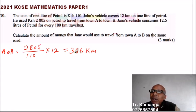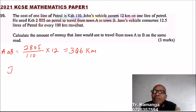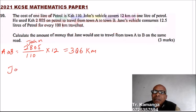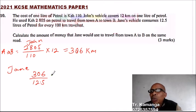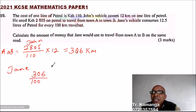Now that we know the number of kilometers, Jane's vehicle consumes 12.5 liters of petrol for every 100 kilometers. Jane was to cover 306 kilometers. So you find how many times 100 fits into 306, and then you multiply by 12.5, because it's covering 100 kilometers with 12.5 liters of petrol.